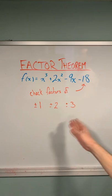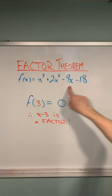Positive or negative 1, 2, and 3 are all factors of negative 18, but positive 3 is the only value that will give us zero when we sub it into our original polynomial.